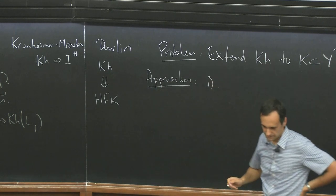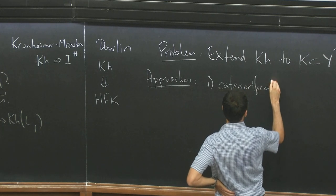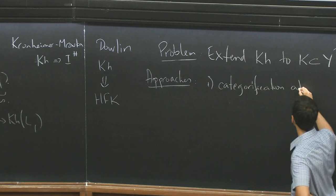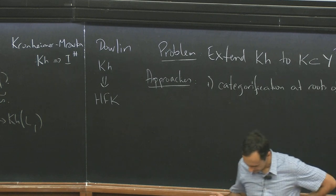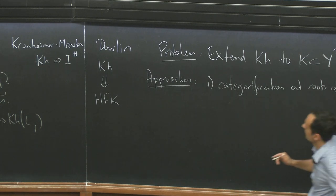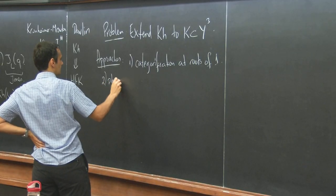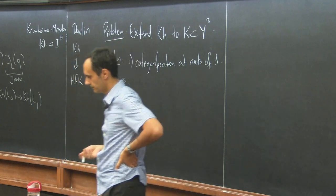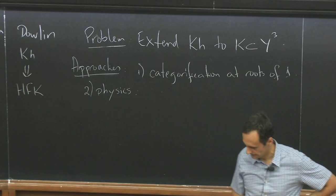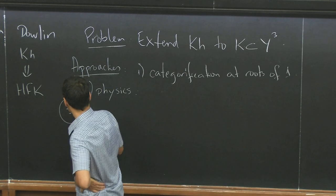There's maybe the best known one, categorification at roots of unity, work of Khovanov and Sassen and Elias and Qi and other people. There's approaches from physics, Peter Witten and Gukov, Peiputrov, Vafa, and others. But the thing that I want to talk about today is the third one, which are these skein lasagna modules.